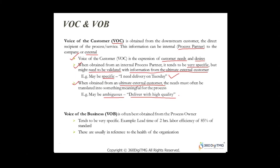That is what Six Sigma is all about — we try to achieve almost zero defects. By definition, Six Sigma is 3.4 defects per million opportunities. Voice of Business is often best obtained from the process owner — the person who manages and owns the process, makes changes to it, and ensures it is implemented. If you collect Voice of Business it tends to be very specific, for example: lead time of two hours, labor efficiency of 85 percent of standards.